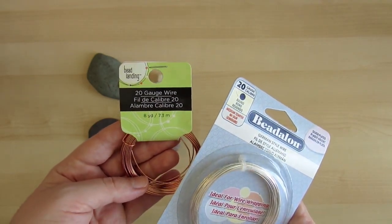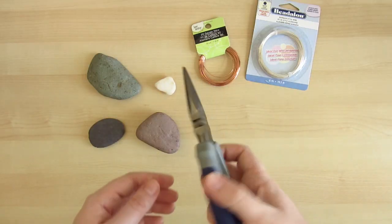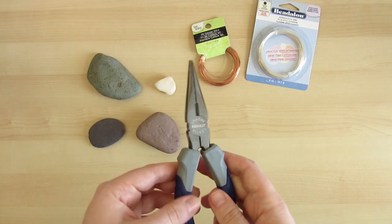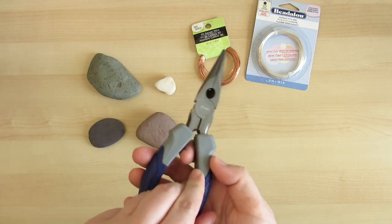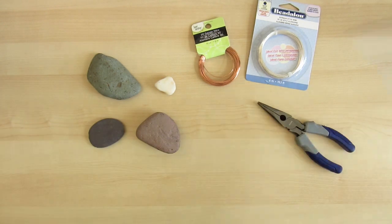You'll need needle nose pliers, and if you don't have snippers, try to use the pliers with the cutter already in the middle of it. You'll also need a pen to make the spiral.